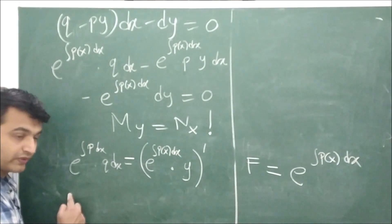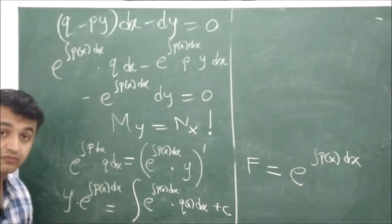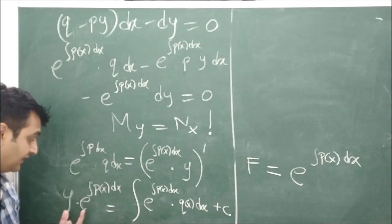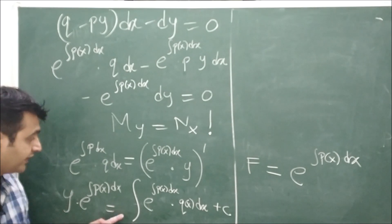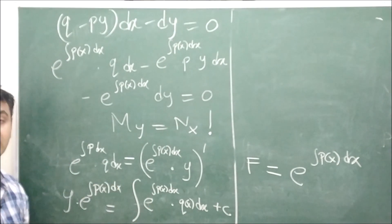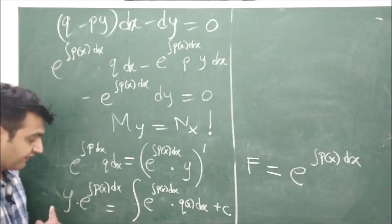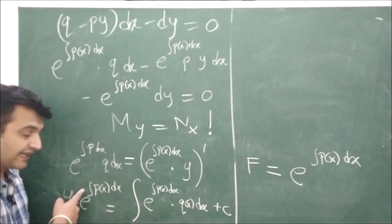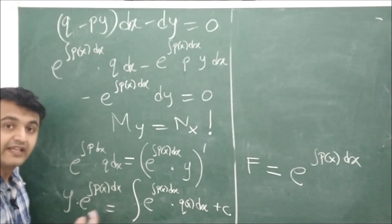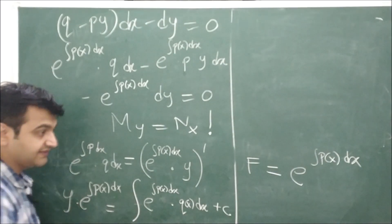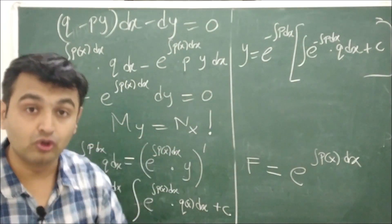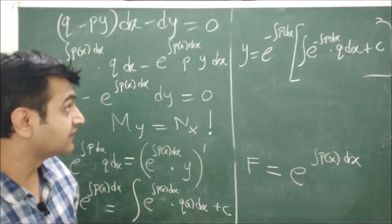Bringing this to one side and integrating both sides: the integral of a derivative is the integrand itself, so we get e^(integral P)·y = integral of [e^(integral P)·Q(x)] dx + C. Multiplying through by e^(minus integral P(x) dx) gives the solution y explicitly.